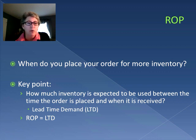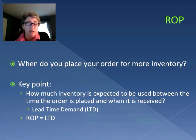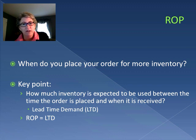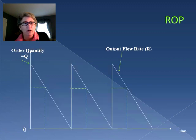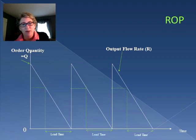In very simple situations, the reorder point is just equal to the LTD — the amount that we use from the time we place the order to the time it's received. If we look at it graphically, we notice Q is the amount that we're actually ordering.